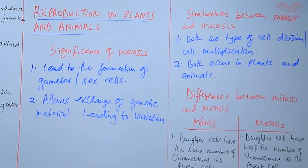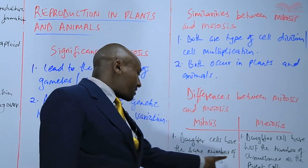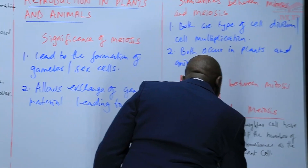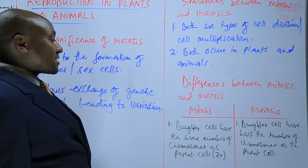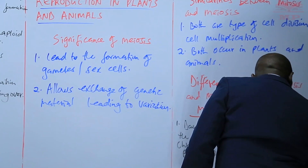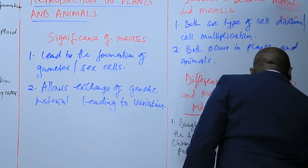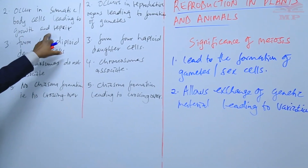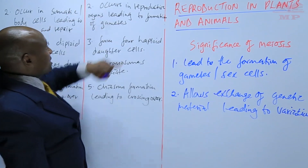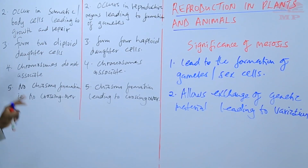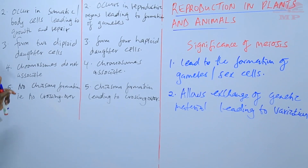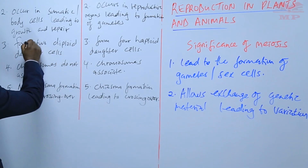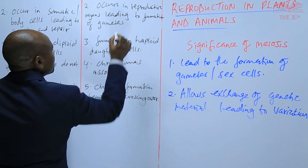The differences are: in mitosis, daughter cells have the same number of chromosomes as the parent cells, abbreviated as 2N. But in meiosis, daughter cells have half the number of chromosomes as the parent cell, abbreviated as N. Mitosis occurs in somatic cells leading to growth and repair. Meiosis occurs in reproductive organs leading to formation of gametes. And number three, mitosis forms two diploid daughter cells, while meiosis forms four haploid daughter cells.